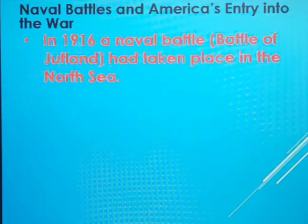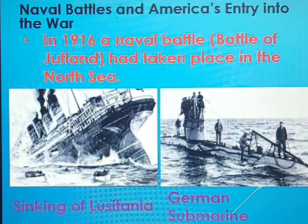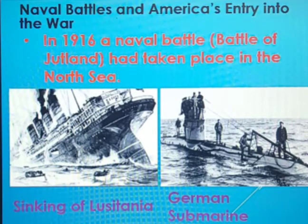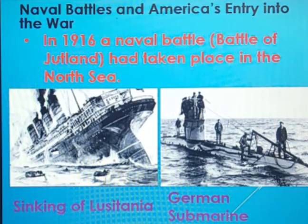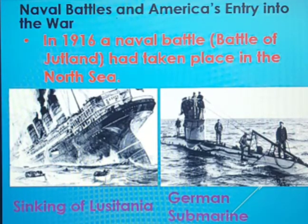Now we shall see naval battles and America's entry into the war. The naval battle of Jutland happened in the year 1916 in the North Sea. Germany started to use submarines — U-boats. These submarines drowned many merchant ships of Britain and also many merchant ships of America. Especially the Lusitania was drowned by Germany. The USA entered the war in the year 1917. During that time, the president of the USA was Woodrow Wilson, who declared war on Germany in 1917. Likewise, the USA entered and joined the allied powers.